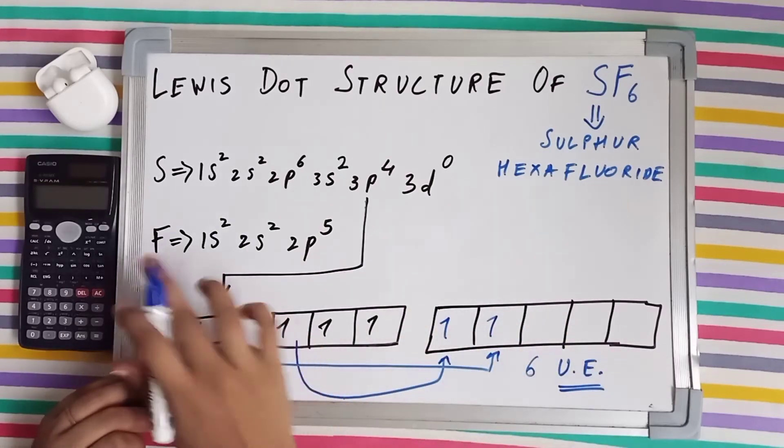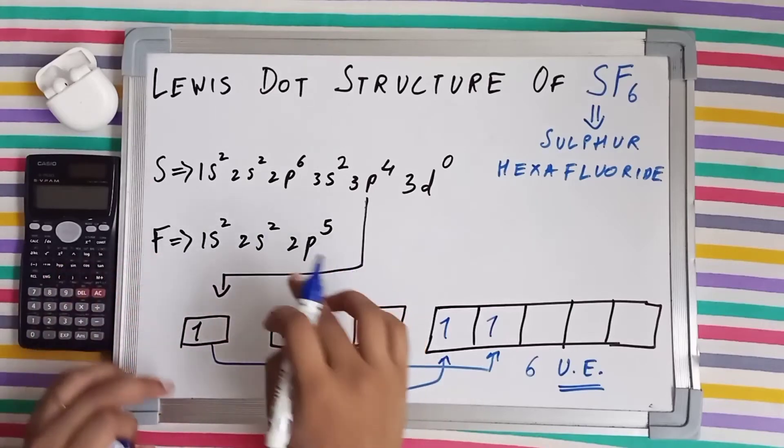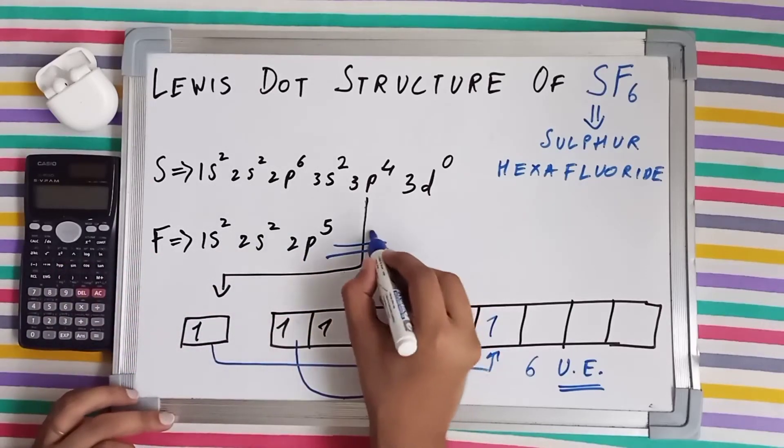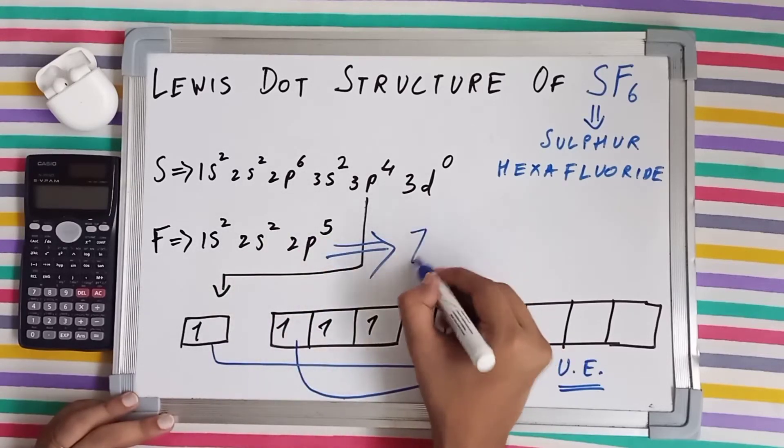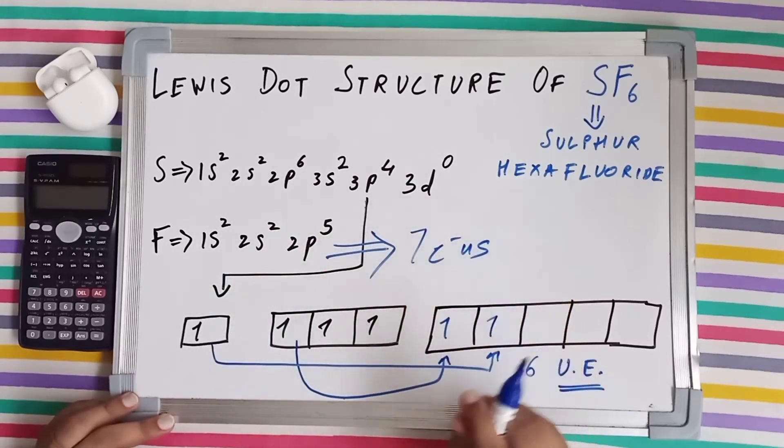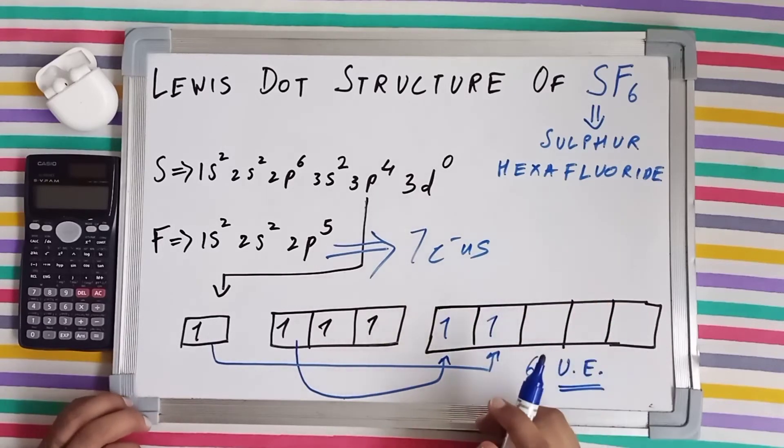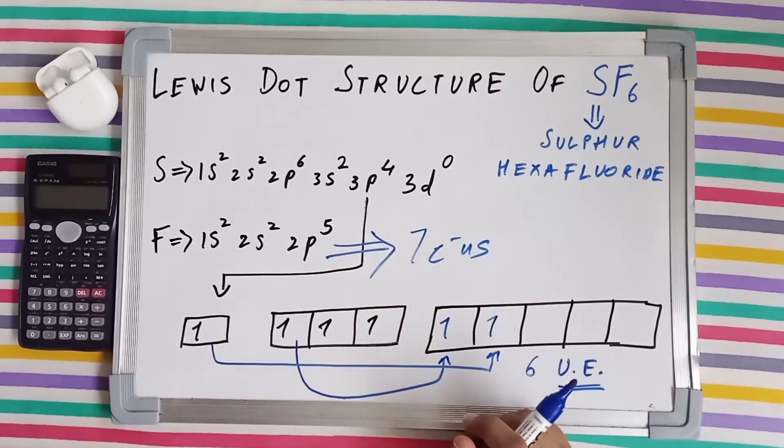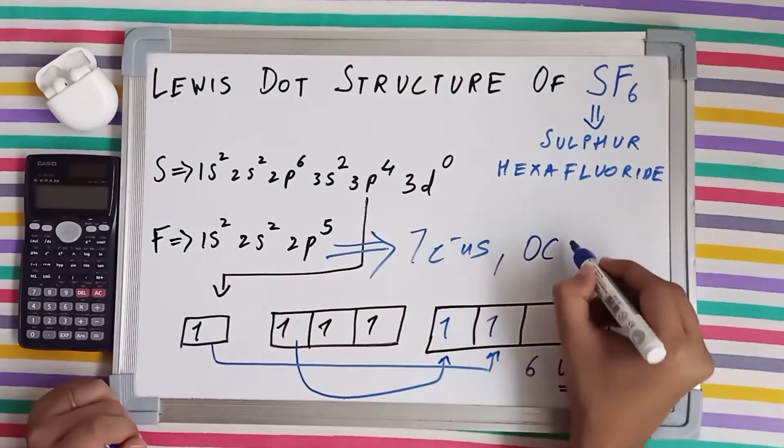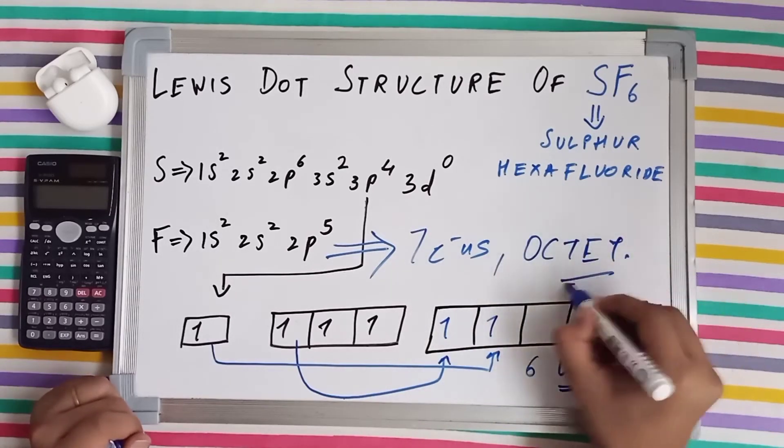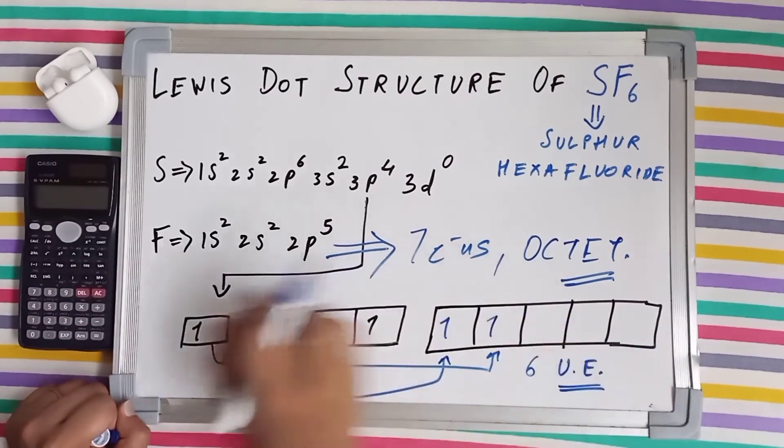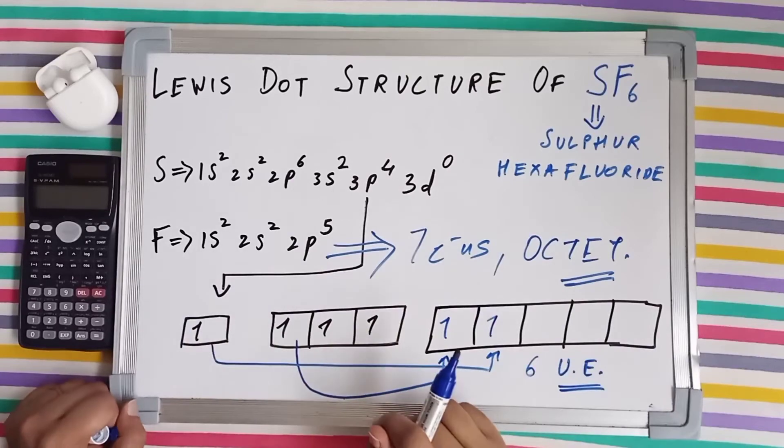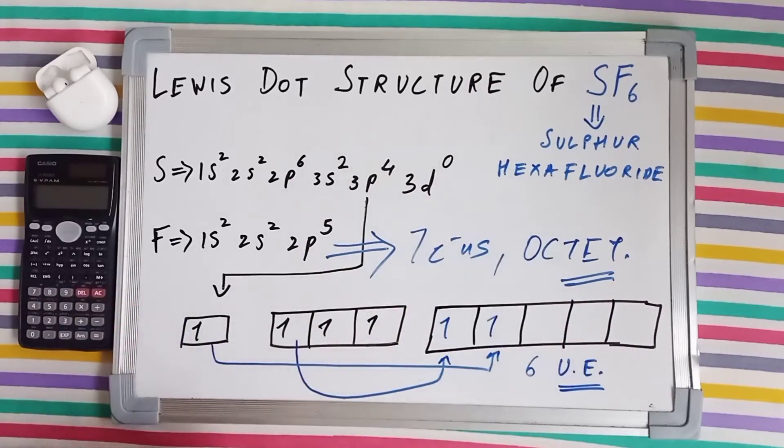Now let's talk about the electronic configuration of fluorine. The number of valence electrons fluorine has is seven electrons, which means according to Lewis octet rule, it just needs a single electron to complete its octet. So fluorine makes a single bond, whereas sulfur with its expanded octet will make six bonds. Now let's proceed to the drawing part.